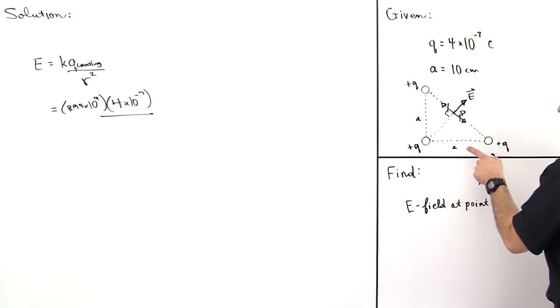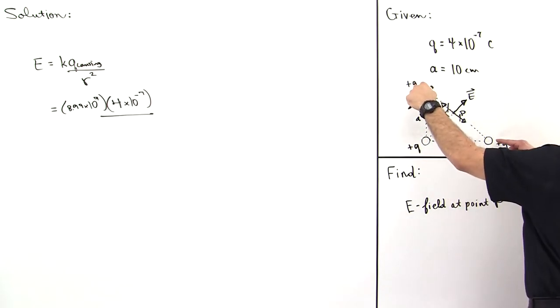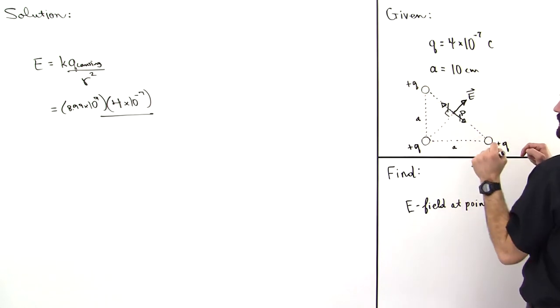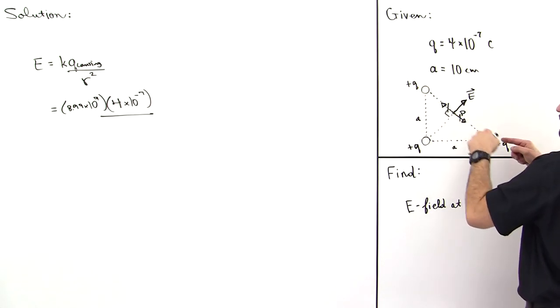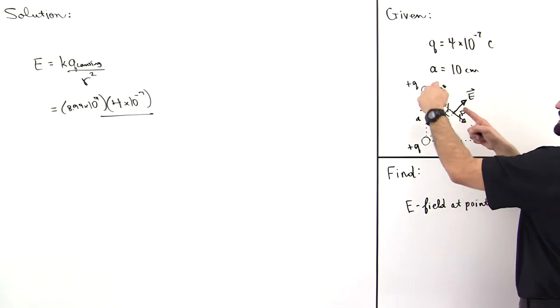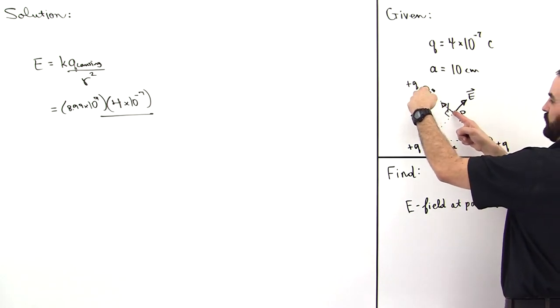Notice that if this is a and this is a, then that means that this big distance is a square root 2. Use the Pythagorean theorem to find this big distance. And then this is the midpoint of this line, and so this distance here is going to be a square root 2 over 2, and this distance is going to be a square root 2 over 2.